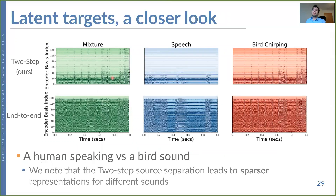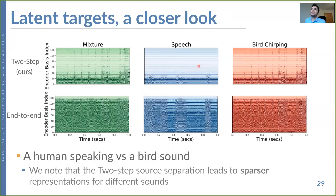Looking at the encoded representations for a speech utterance mixed with a bird sound, the two-step approach produces sparser and more dissimilar representations for the two different source types. Specifically, bird chirping uses many more encoder bases to be represented compared to speech. This is not the case for the end-to-end approach, which uses most of the encoder bases for both.